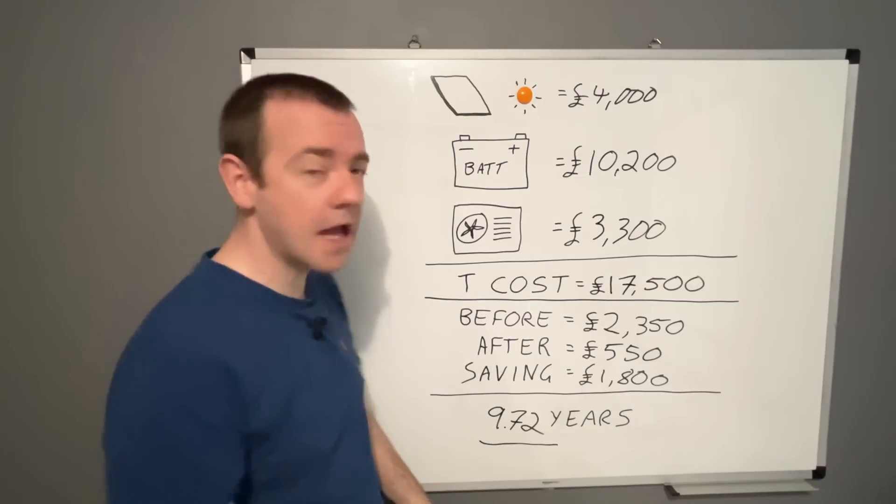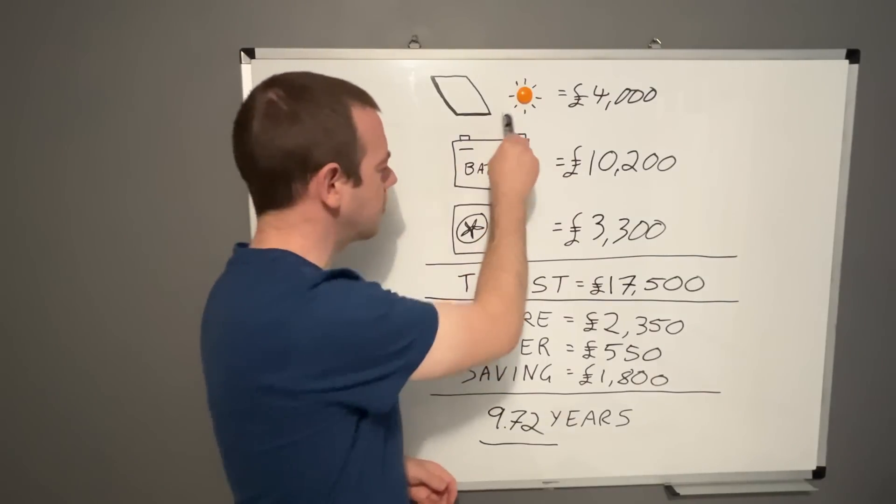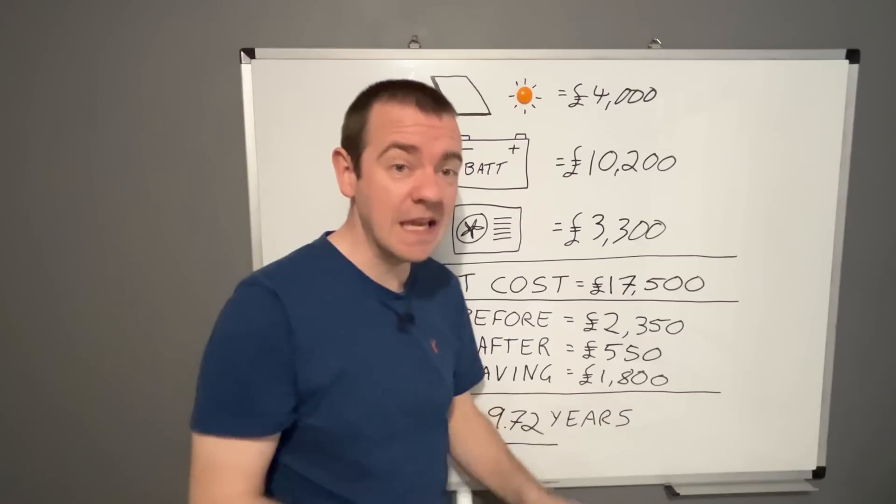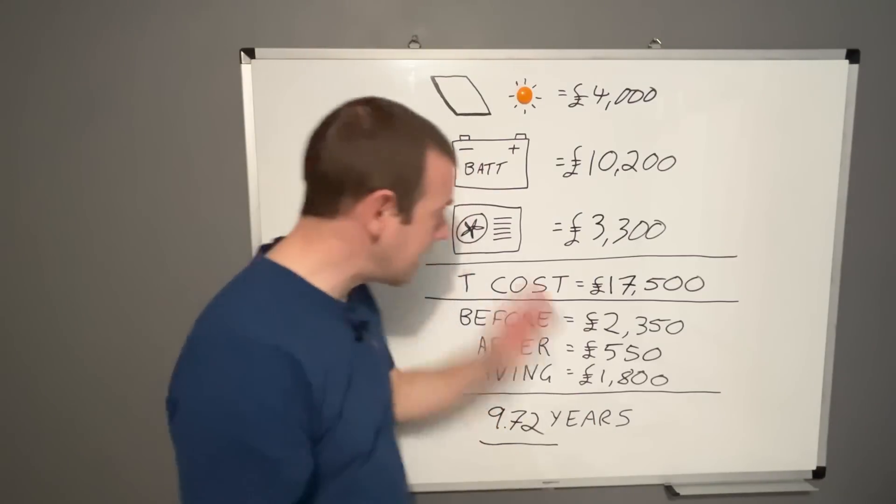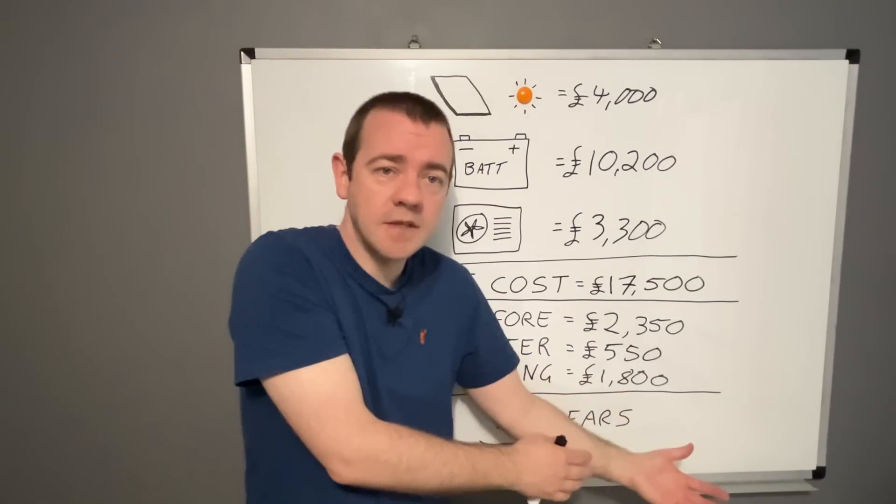Imagine the papers, imagine the mainstream media, let alone people on Twitter and Facebook. If you had to get a sensor for a battery or solar panels or even a heat pump that basically meant, well, if it leaks, it's going to kill you. It would be all over the Daily Mail.